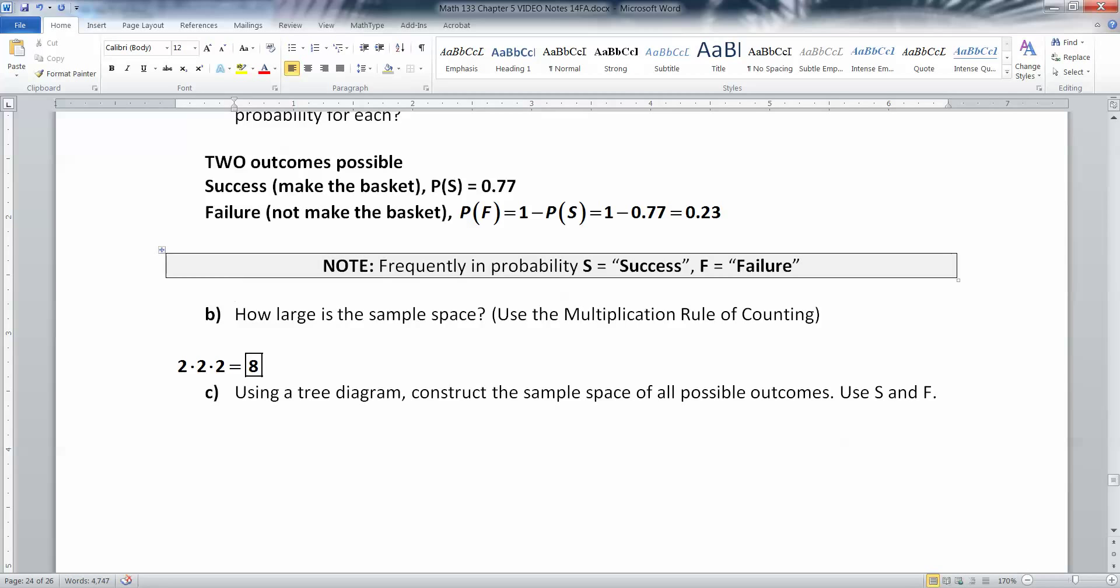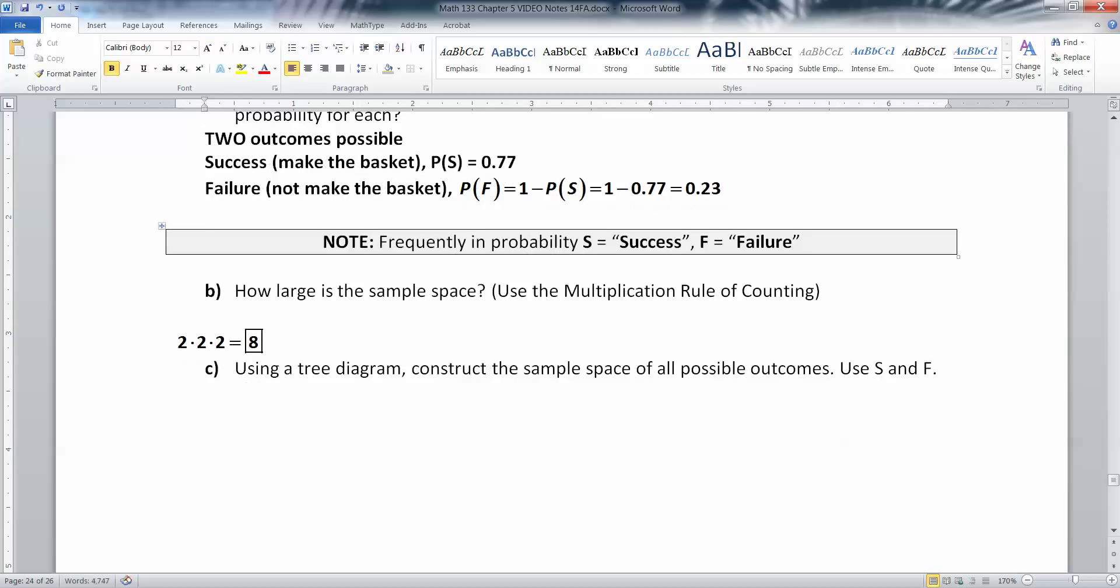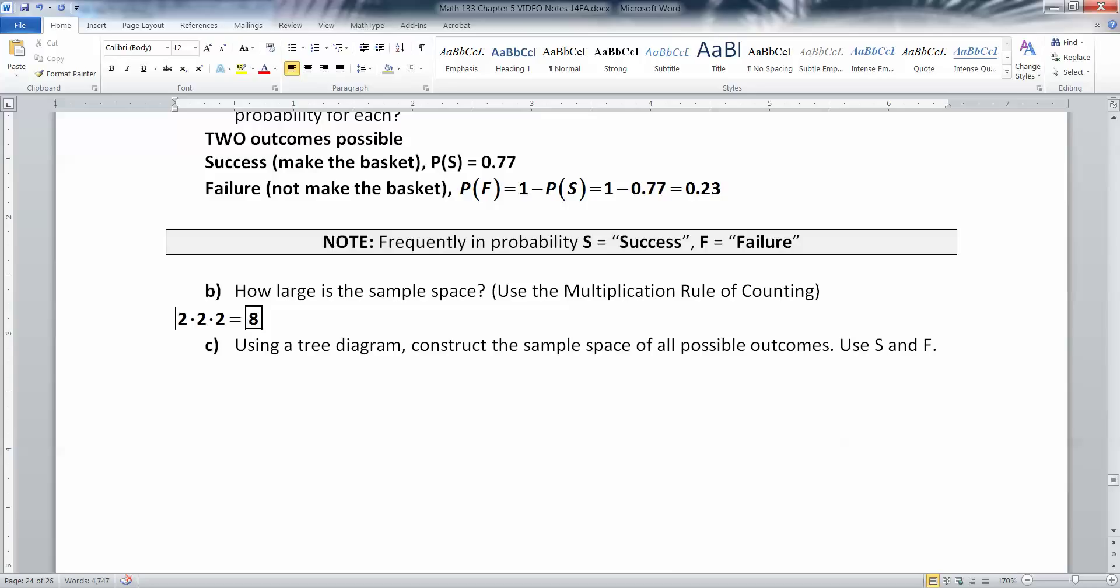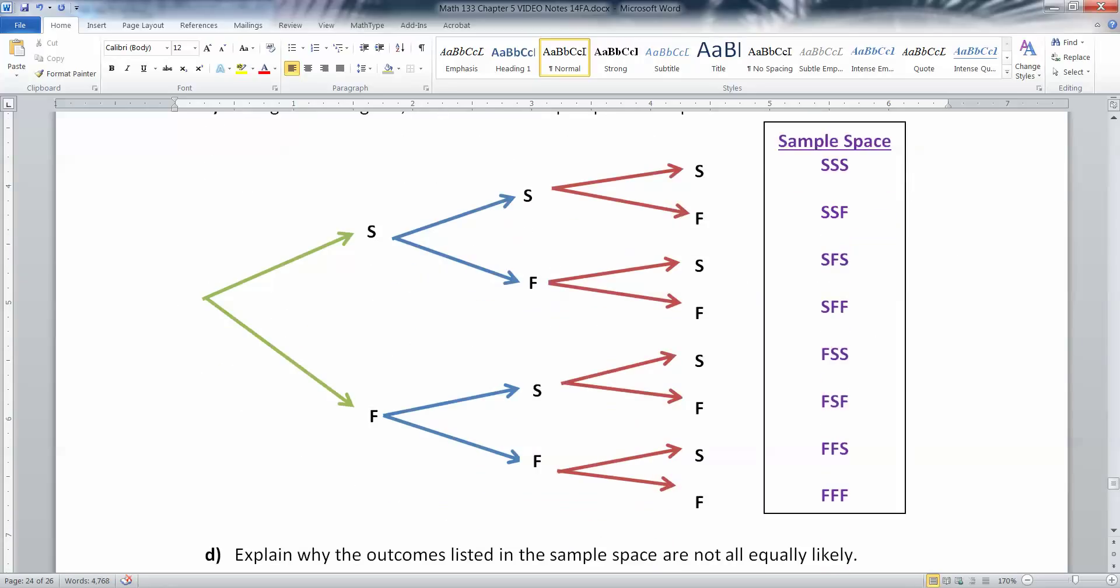All right, now we're going to do something a little bit old school, and we're going to draw a tree diagram for that sample space. So we have our first player right here in green. Pretend they're wearing a green jersey. And they've got a chance of success or fail. And then the second player wearing a blue jersey comes up, and they could succeed or fail after the first one succeeds. Or if the first one fails, then they could succeed or fail after that. Then the third player is wearing a red jersey, and they could succeed or fail. And that gives you eight options totally. When you count these branches here at the end, you've got eight.